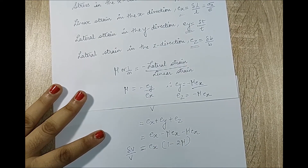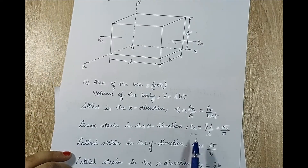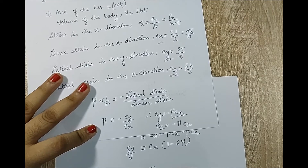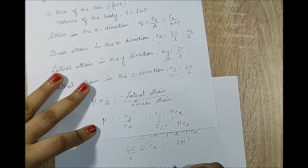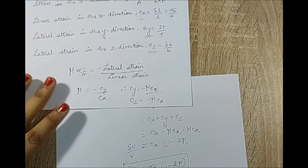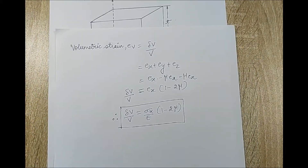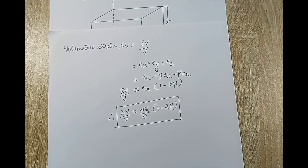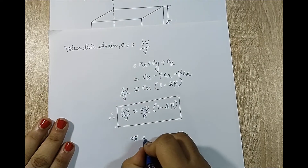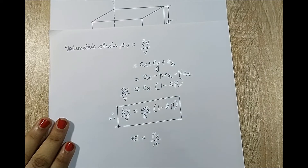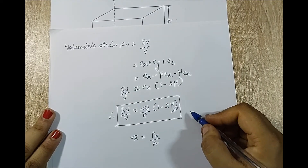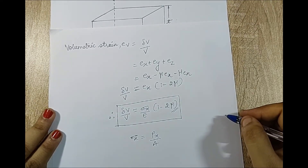Also I can write δV/V as sigma x upon E, so this becomes sigma x upon E into (1 − 2μ). This is the required equation and constitutes the derivation for uniaxial loading. To calculate sigma x for any numerical problem, use the formula Px upon A, and the value of μ will either be given or can be calculated from the ratio of lateral strain to linear strain.